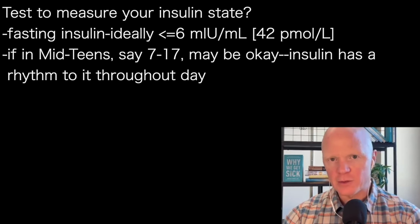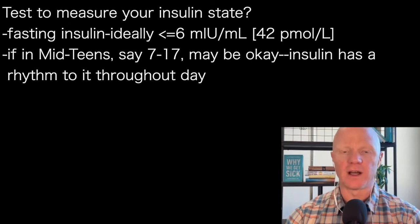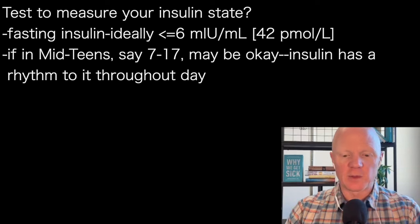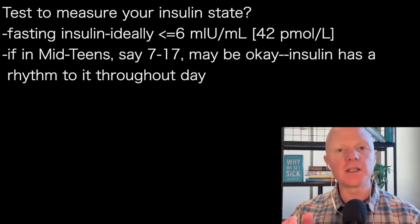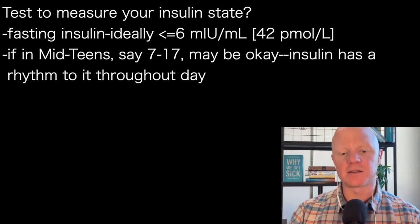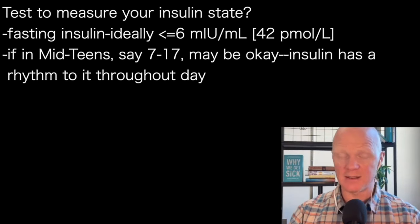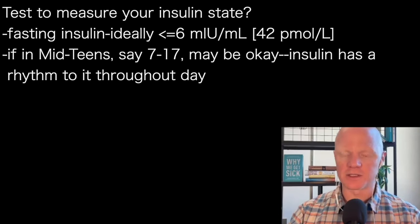So six microunits per milliliter is the target. But what if it's a little higher — up to the mid-teens, for example? If someone has a fasted insulin between roughly 7 to 17, that doesn't necessarily mean they're insulin resistant. Elevated insulin is a sign of insulin resistance, but insulin has a rhythm to it, like many hormones do. It'll ebb and flow throughout the day, and it's entirely possible your blood is drawn at a moment when insulin was starting to climb — for instance, it climbs in the morning and may again in the mid-afternoon, even in a purely fasted state.